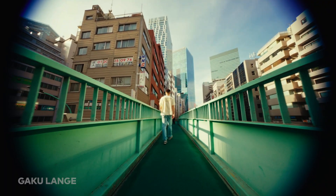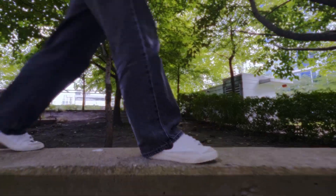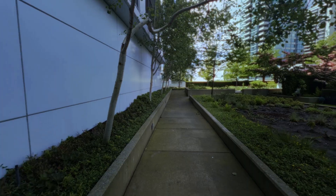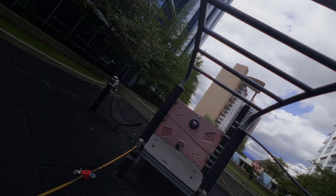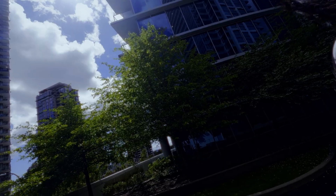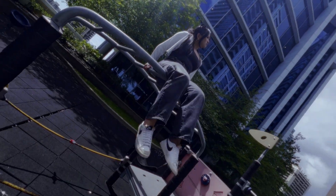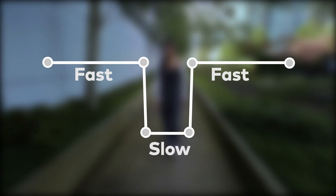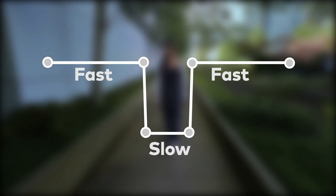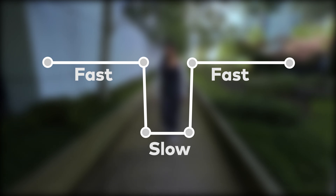Or if you want to use speed ramping in multiple shots, this following one is going to be a really good reference for you. To achieve this effect, keep one thing in mind: maintain consistent movement across all shots. In this case, I'm going to pull out on all the shots. We want the pull-out to be fast at the beginning and end of each shot, so the speed graph should look like this — faster at the front and back and slower in the middle.